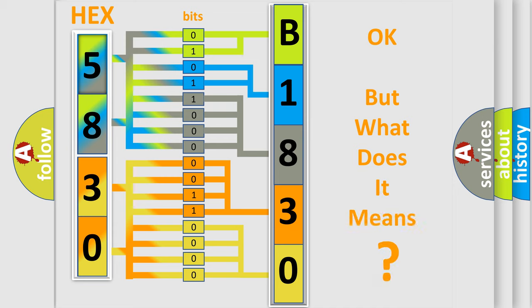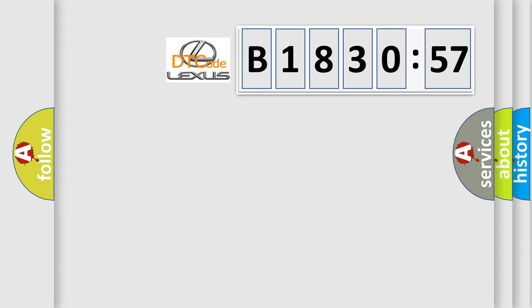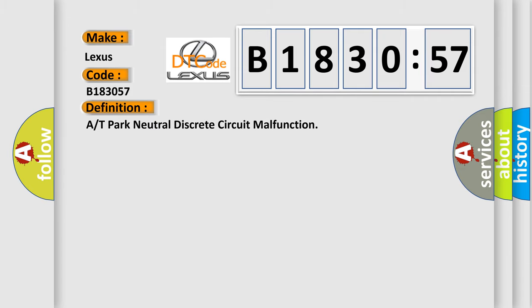The number itself does not make sense to us if we cannot assign information about what it actually expresses. So, what does the diagnostic trouble code B183057 interpret specifically for Lexus car manufacturers? The basic definition is ATPARC neutral discrete circuit malfunction.